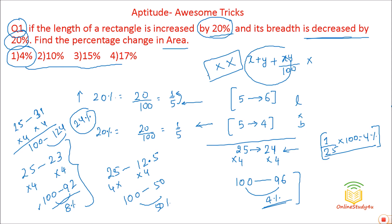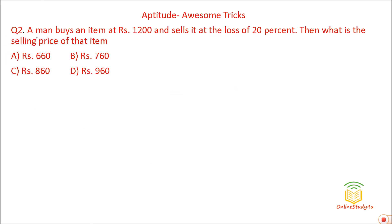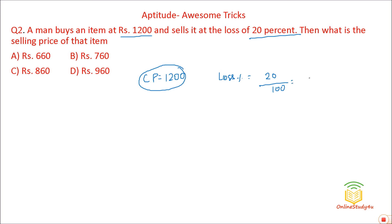Moving to question number 2. A man buys an item at Rs. 1200 — do not use any formula. He is selling it at a loss of 20%. 20% loss means 20/100, which is 1/5. So if he bought it for 5 rupees, he has a loss of 1 rupee.